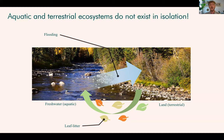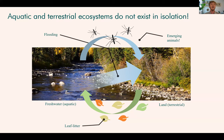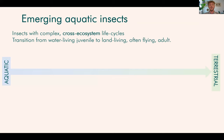Fresh waters export resources back onto land all the time, and this happens through the movement of animals — for example, animals which have complex life cycles, like amphibians such as frogs and salamanders. But most importantly, the largest group that do this are of course insects: the emerging aquatic insects, which are the main focus of my talk today. These are insects with complex cross-ecosystem life cycles, and they transition from a water-living juvenile to a land-living, often flying adult.